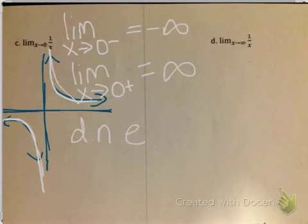Part D asks: the limit of 1/x as x goes to infinity. Now all I care about is as x gets bigger and bigger, what's the graph approaching? We know that this is 0. This is where it's an asymptote, and I only have to worry about one side because it's positive infinity — I can't approach positive infinity from both left and right.